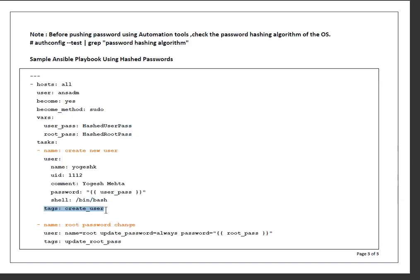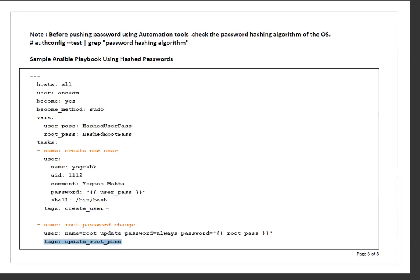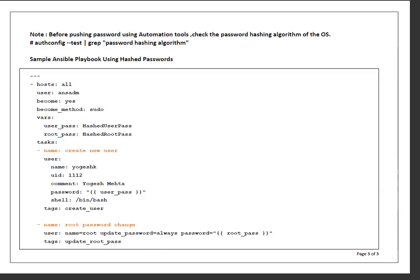I have put a tag called 'create_user'. The benefit of using a tag here is that instead of running the whole playbook I can run only this particular section if the requirement is only to create a user. The second task is to update root password — user root, update_password always, password equals the root_underscore_pass variable, tagged as 'update_root_password'. This also shows how you can define playbook tasks in different formats: each entry on a separate line versus everything on a single line.